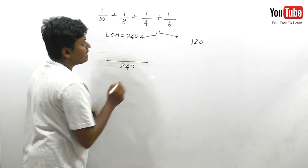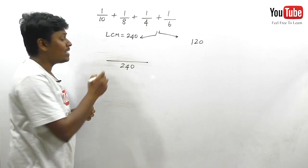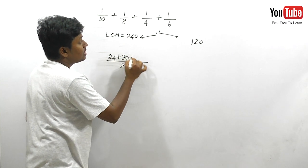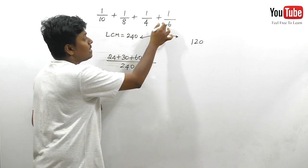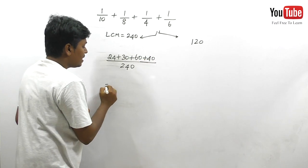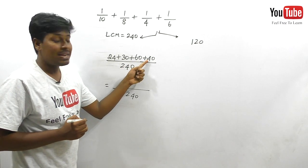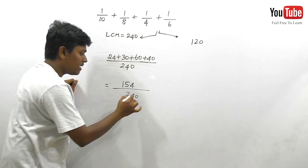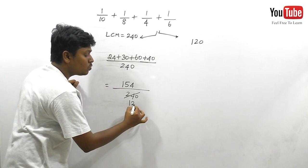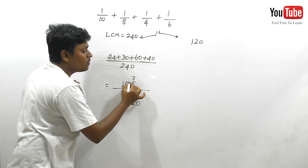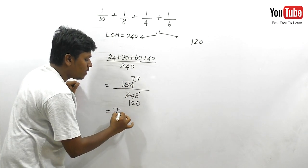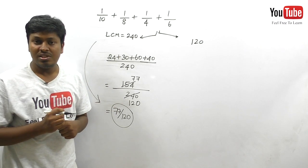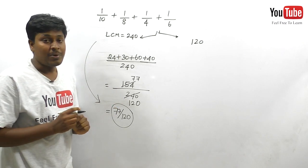Using LCM = 240: 240 ÷ 10 = 24, 240 ÷ 8 = 30, 240 ÷ 4 = 60, 240 ÷ 6 = 40. So the sum is 24 + 30 + 60 + 40 = 154, over 240. Simplifying by dividing both by 2: 77/120. So the final answer is 77/120.